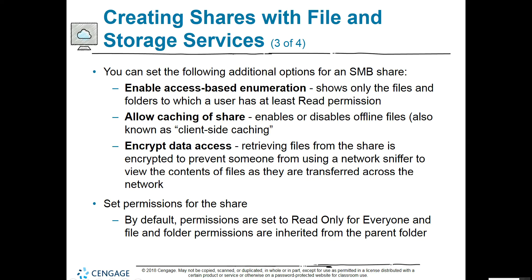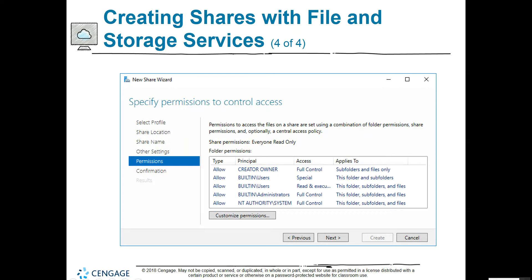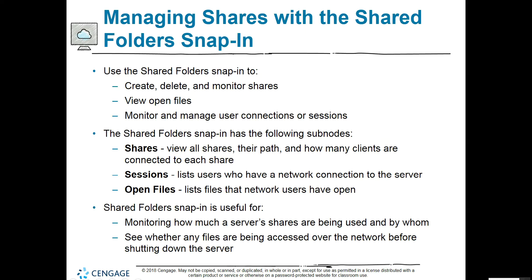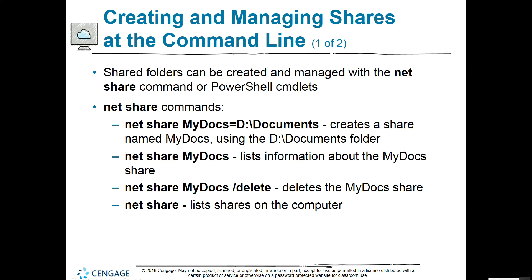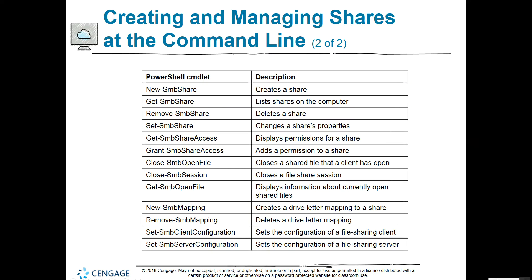Additional options for an SMB share include enabling access-based enumeration, allowing caching of the share, and encrypting data access. You can also set permissions specifying who gets to do what when it comes to access on the new share. Shares can be managed with the shared folder snap-in within the MMC, which has shares, sessions, and open files subnodes. PowerShell cmdlets can also be used to manage shares and accomplish everything available through the GUI.